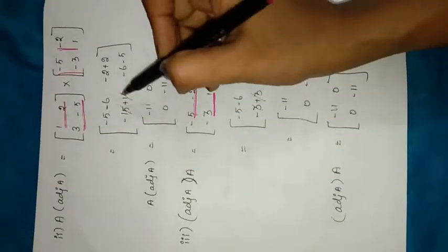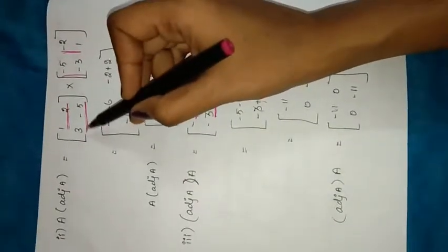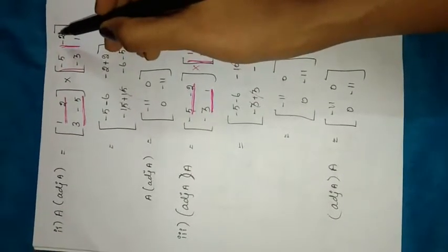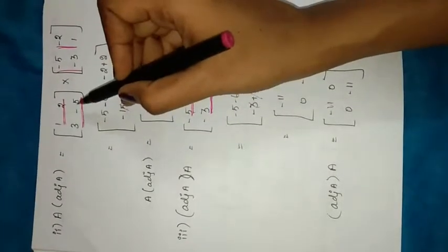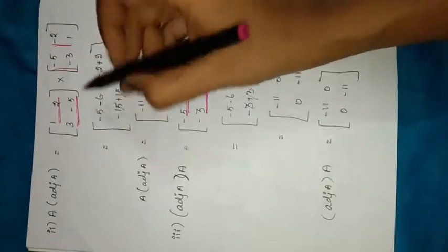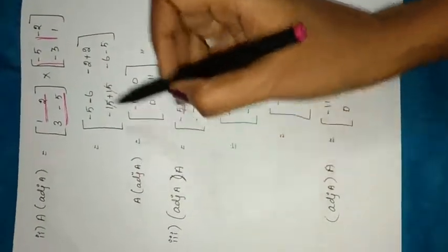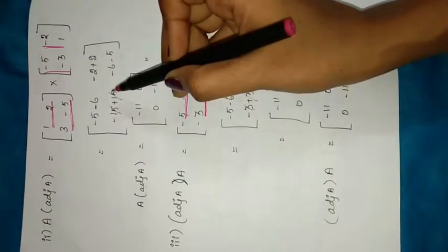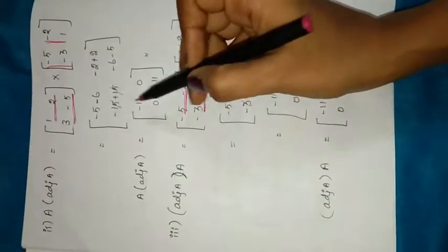Continuing: (-5) × (-3) = +15. For the second row with the second column: 3 × (-2) = -6, and (-5) × 1 = -5. Simplifying: -5 + (-6) = -11; -2 and +2 cancel to 0; -15 and +15 cancel to 0; -6 + (-5) = -11. Therefore A × adj(A) = [[-11, 0], [0, -11]].